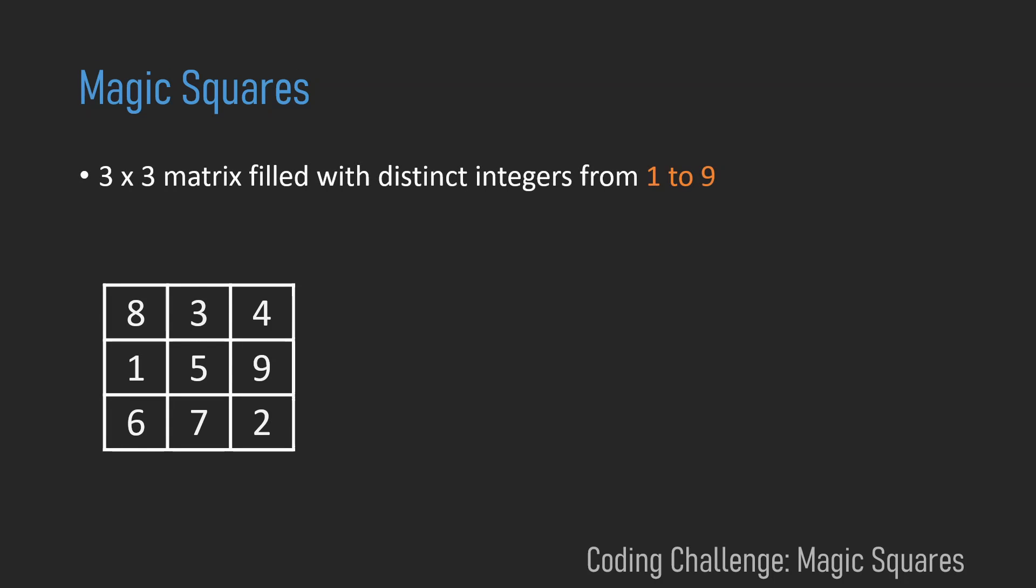Hey everyone! A magic square is a 3x3 matrix filled with distinct integers from 1 to 9, where the sum of every row, column and diagonal is equal to the same number.